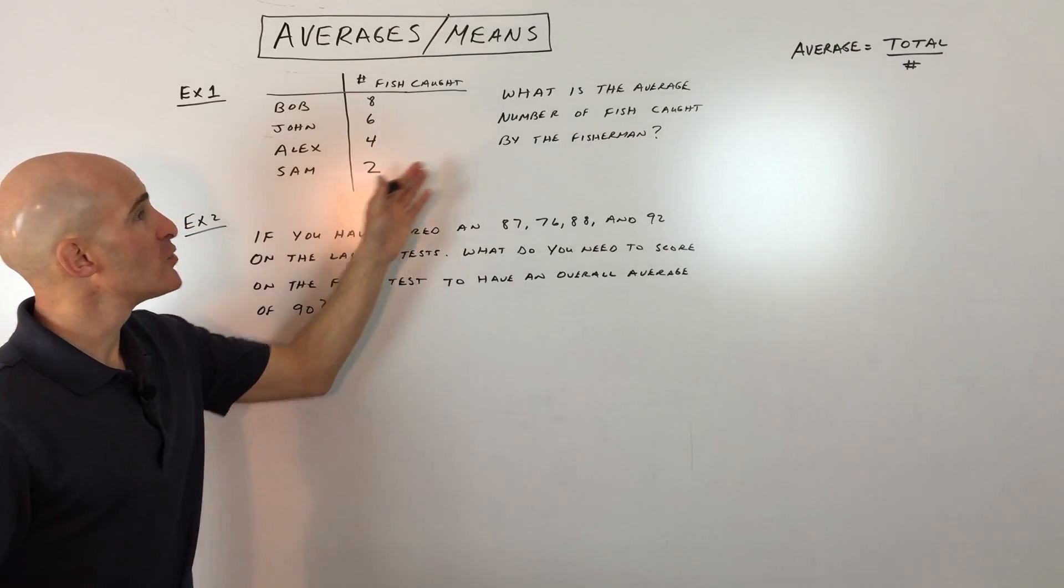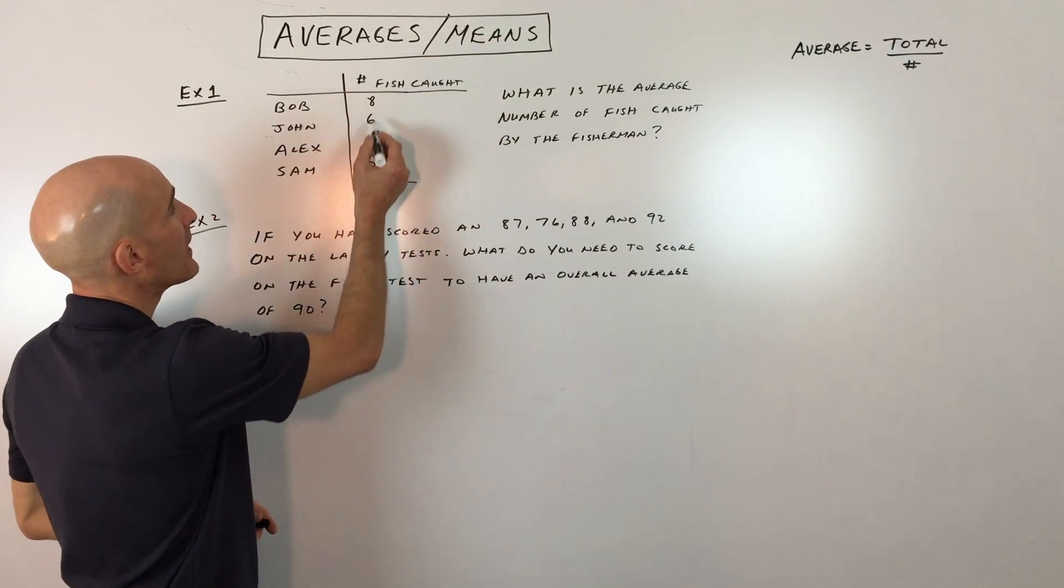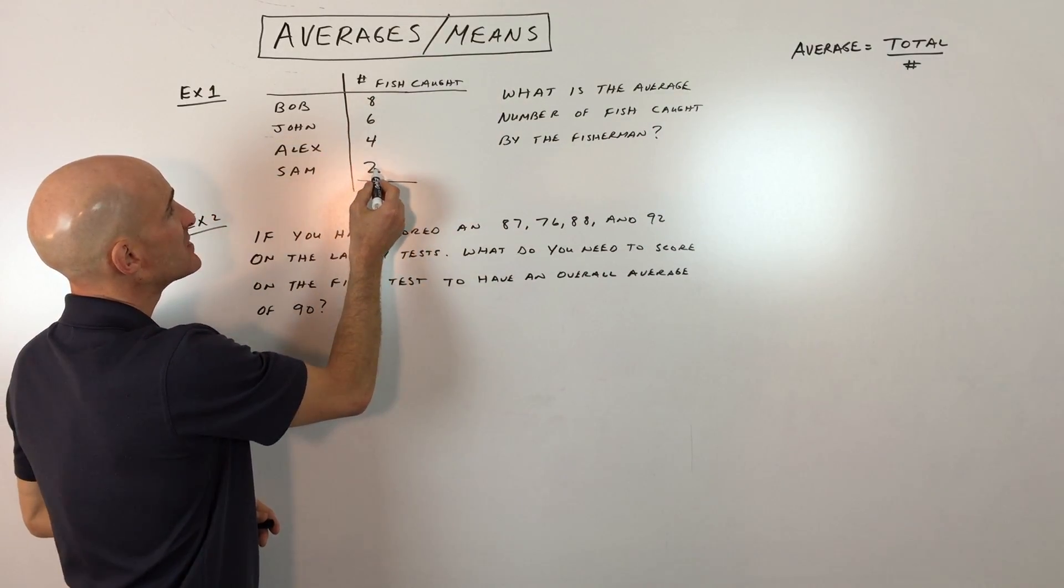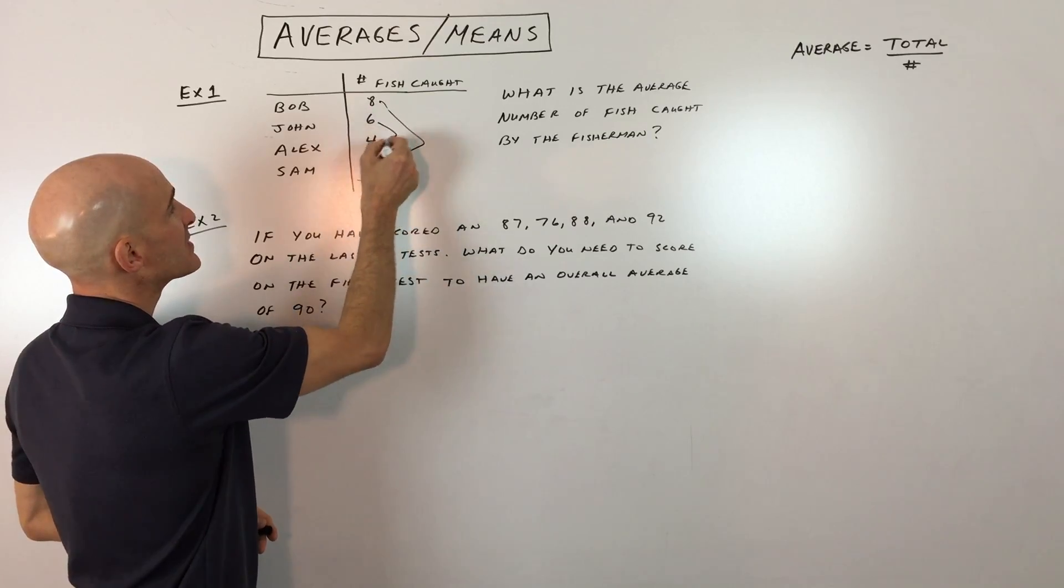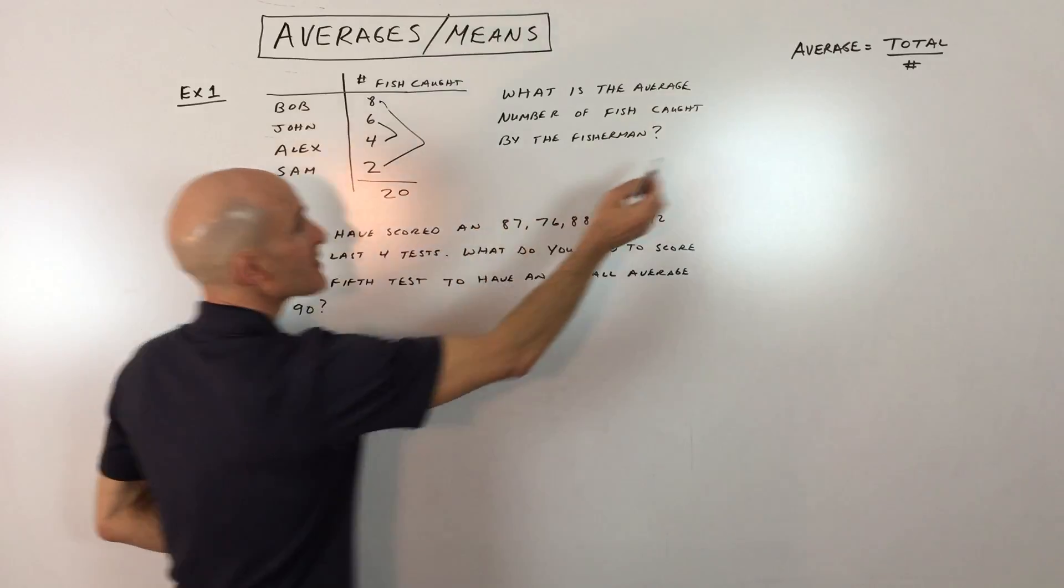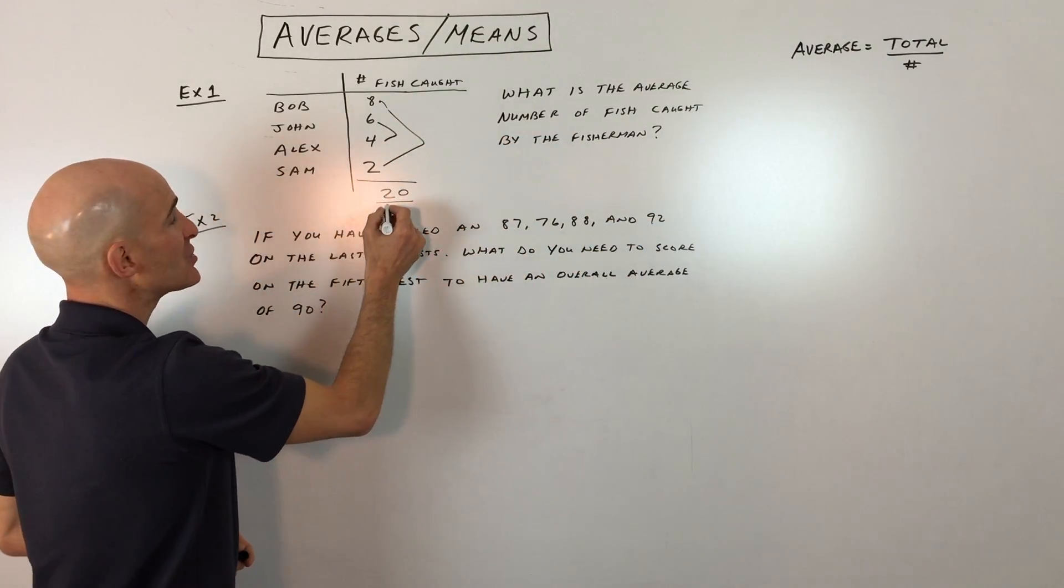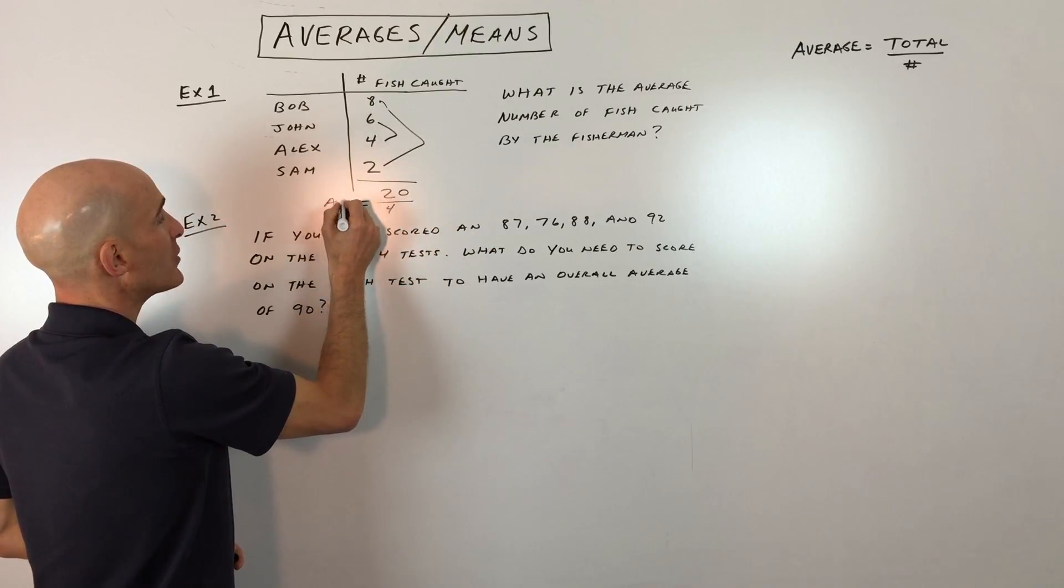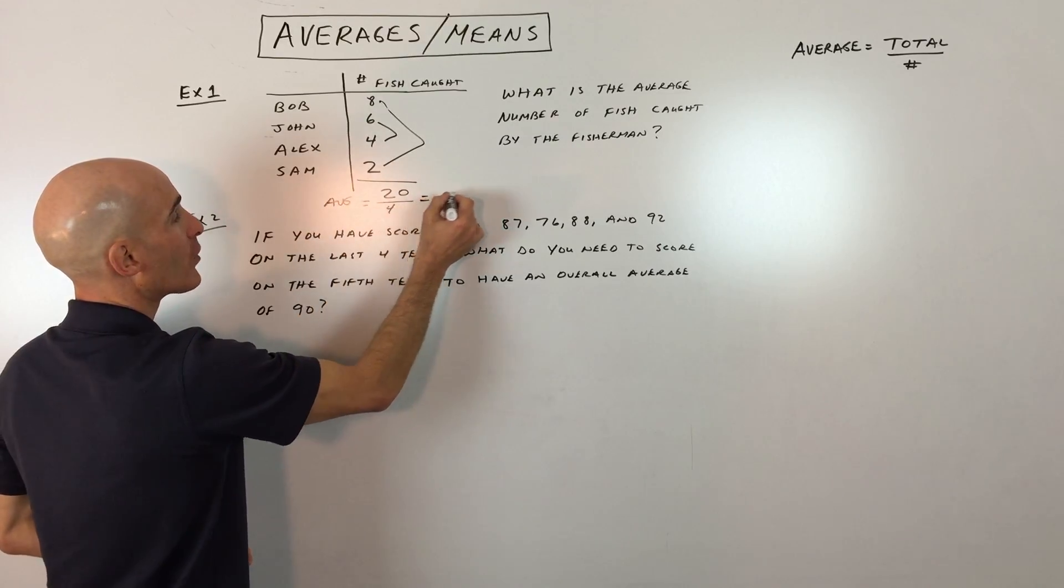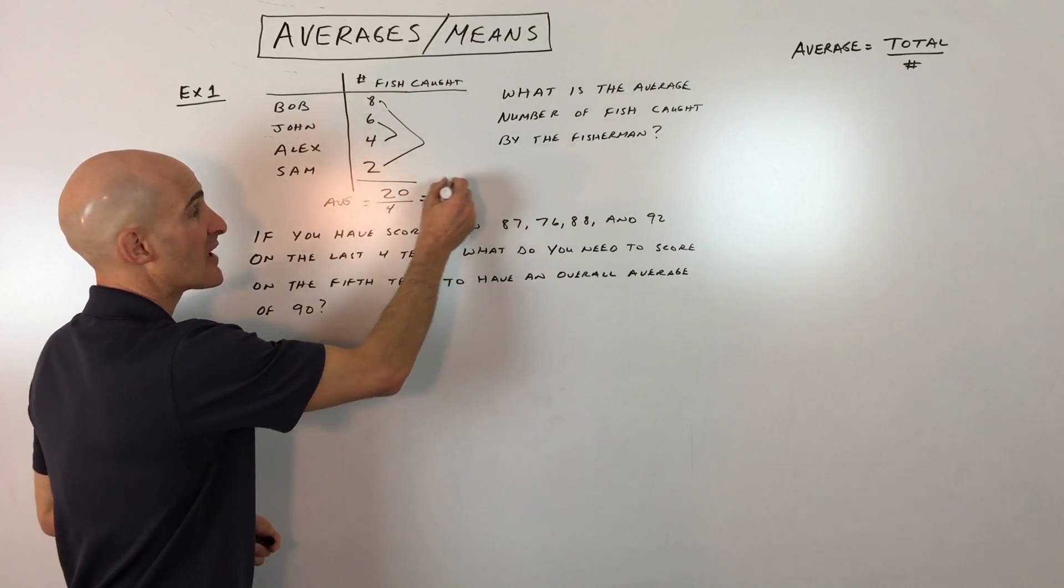Okay. So the first thing we want to do is using our average formula, we want to total up the number of fish caught. So let's go ahead and do that. We've got eight plus two is 10, and six plus four is 10. So 10 plus 10 is 20. So it's a total of 20. That's your total right here divided by how many people are in this competition. There's four. And so that's going to give you your average, which is 20 divided by 4, which means it's five fish on average per person. So the answer is five.